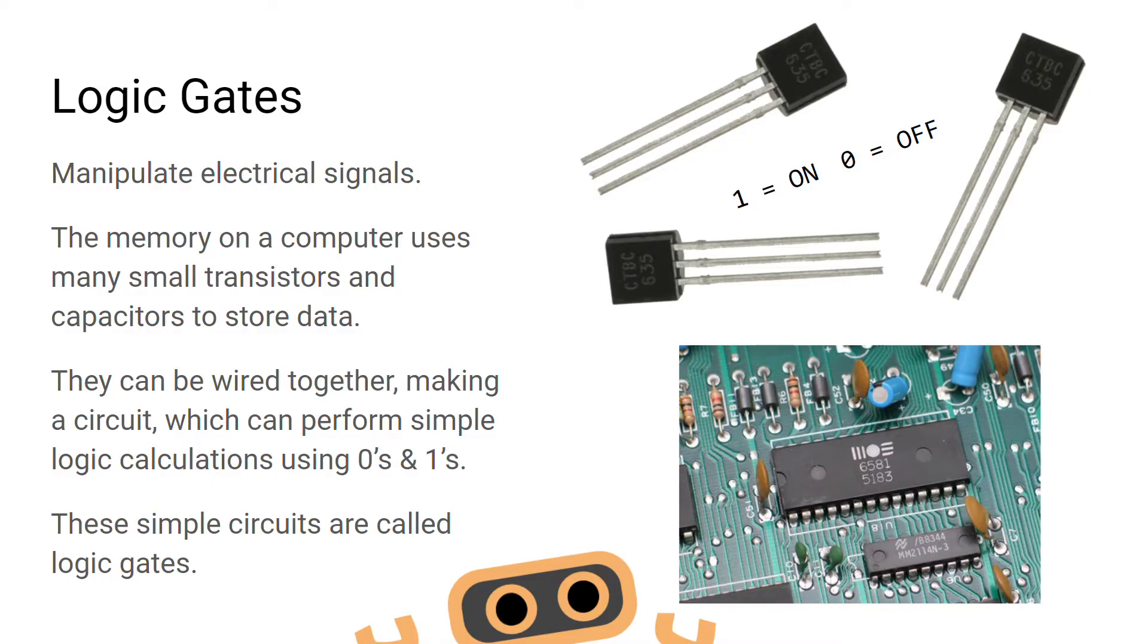On a circuit board, there are thousands of transistors and capacitors which store data and manipulate electrical signals. The signals will be manipulated differently depending on the logic gate assigned to the transistors or capacitors.